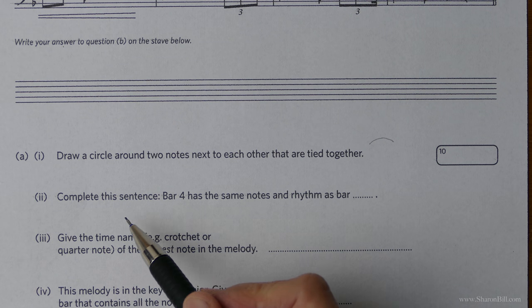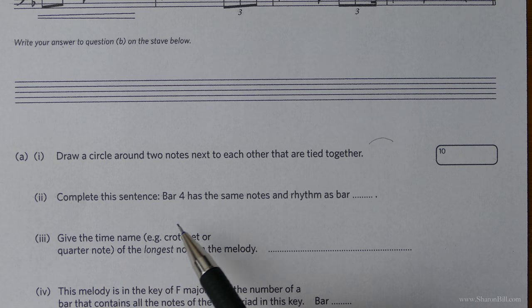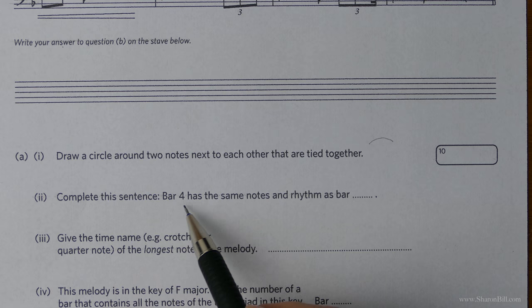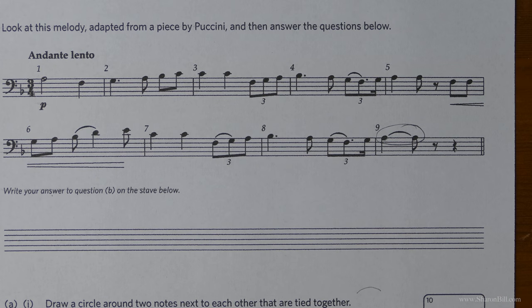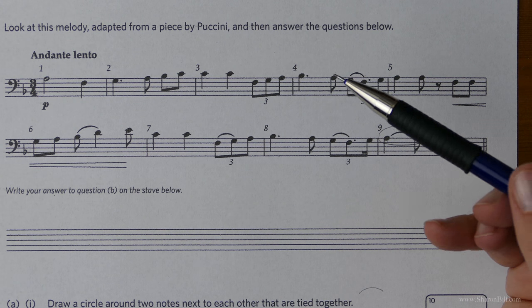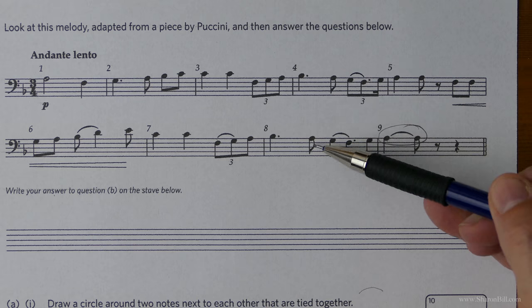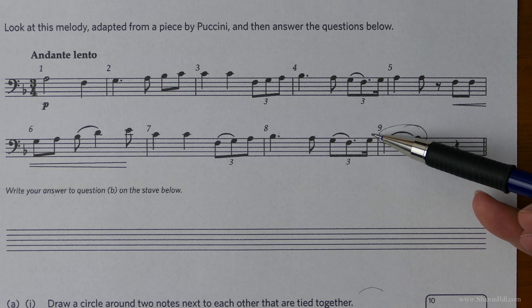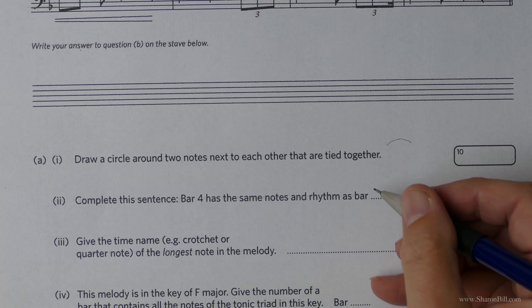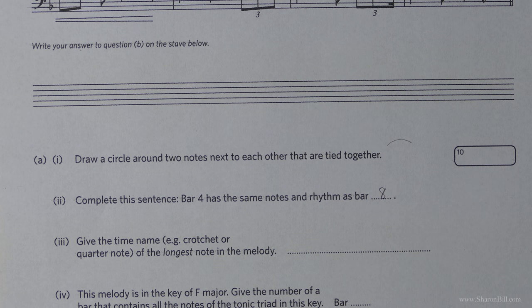Now just a little bit of observation really. We need to say which bar has the same notes and rhythm as bar four. So let's see which bar looks the same just at a glance. So if you're glancing through and actually almost directly underneath you can see bar eight has exactly the same notes and rhythm. So we can say quite easily bar eight.